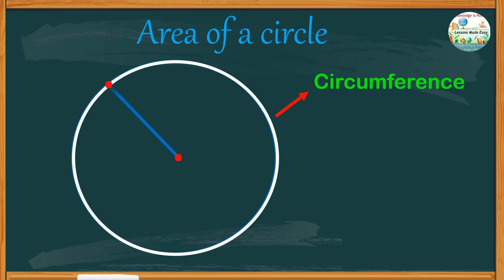From the center to any point on the circumference is what we call the radius. The line segment that passes through the center and whose endpoints lie on the circle is called the diameter. The diameter is twice or two times the radius.